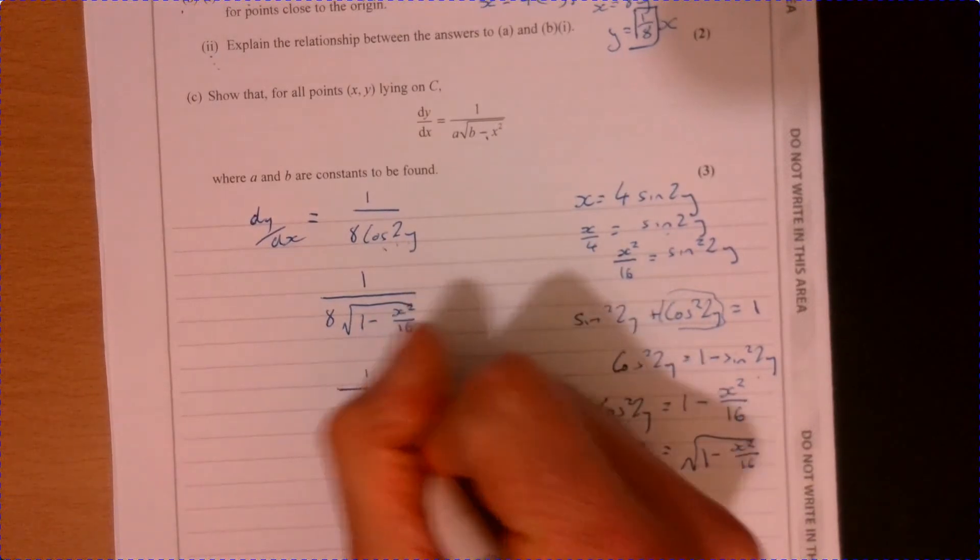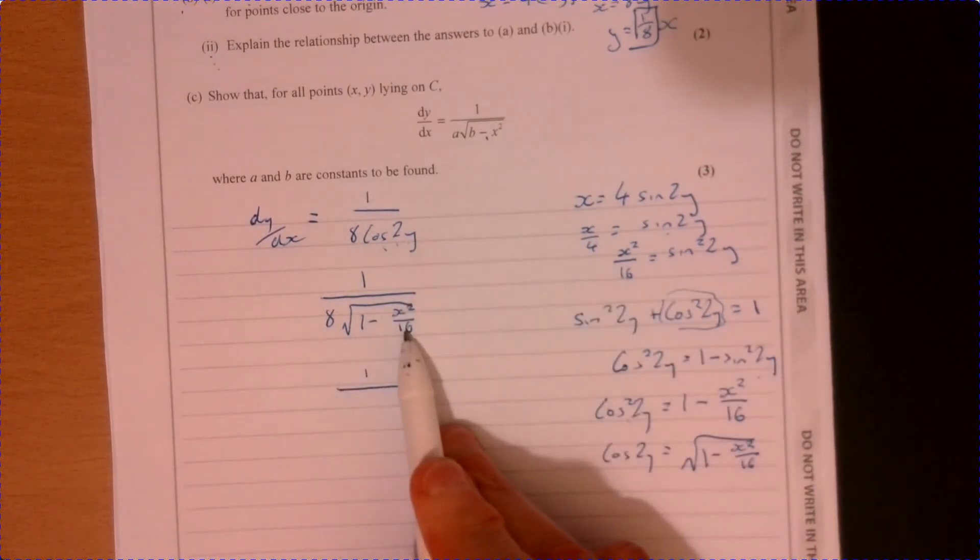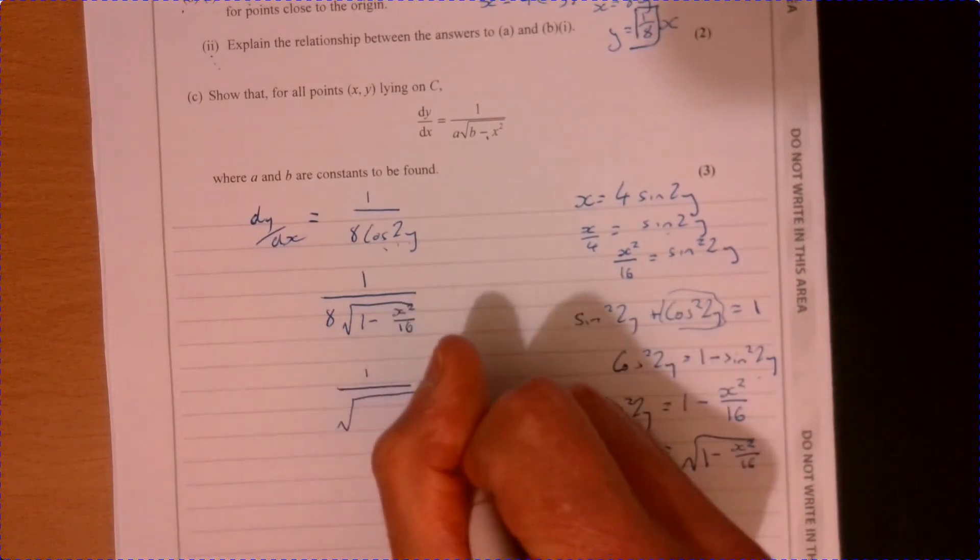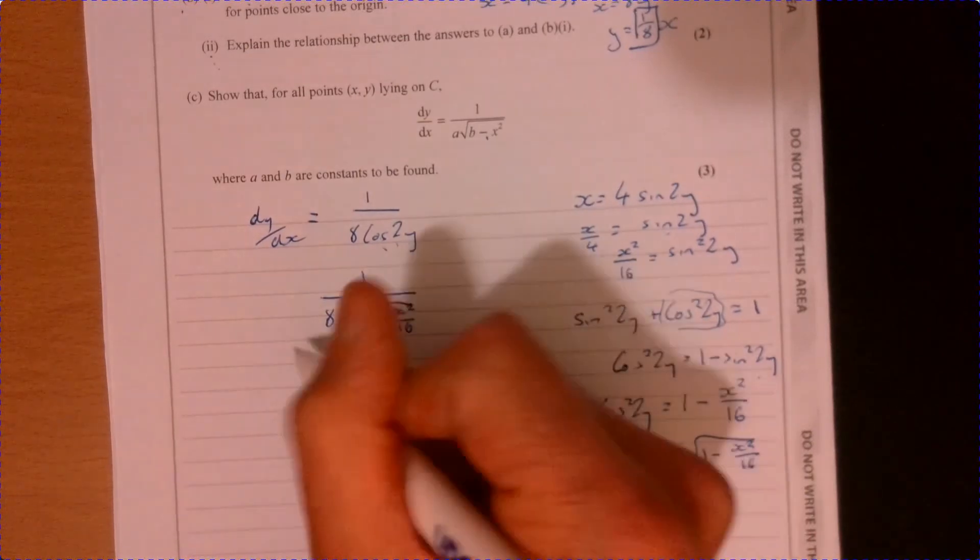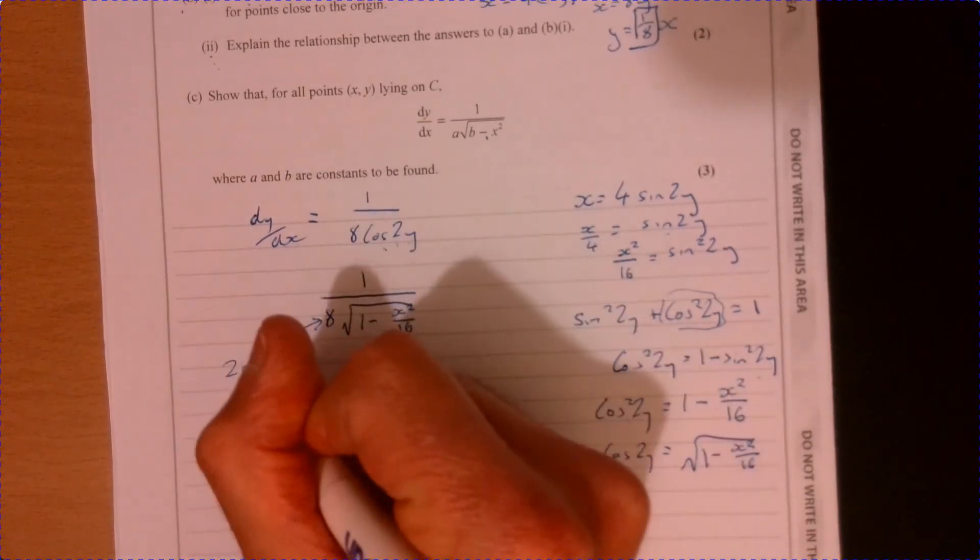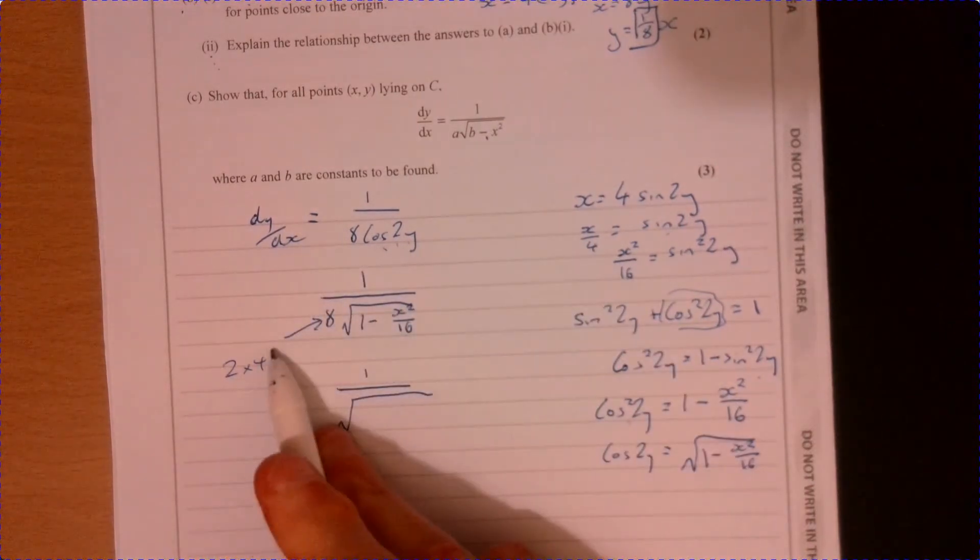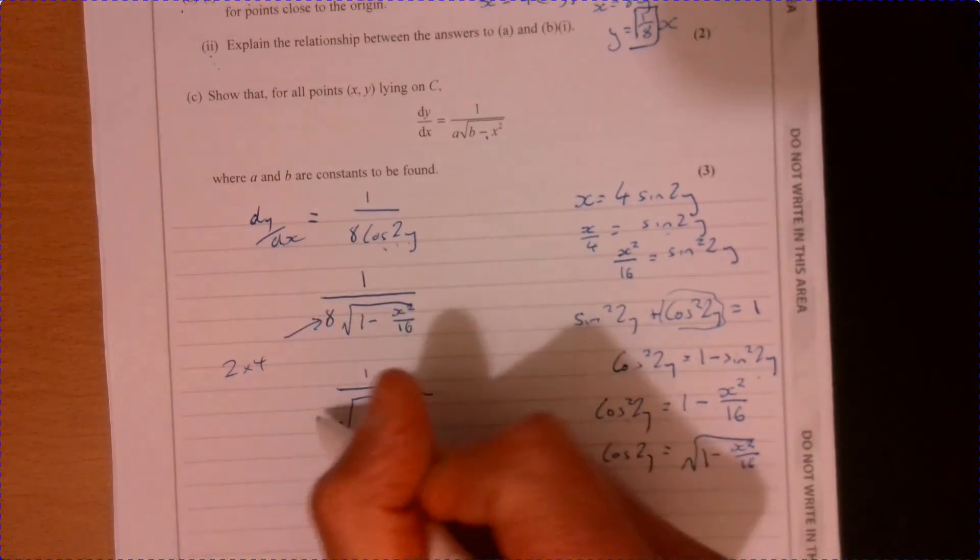This is like a little trick here. I'm saying, how can I get rid of this 16? How can I multiply this by 16? Well, 4 squared is 16. So if I think about this number here is 2 times 4. And take the 4 inside the square root. And then that gives me 16 take away.